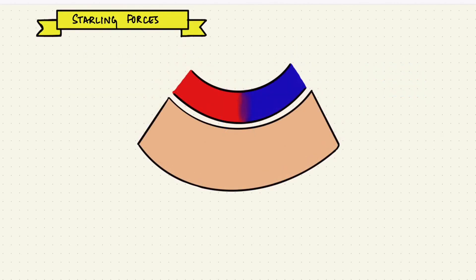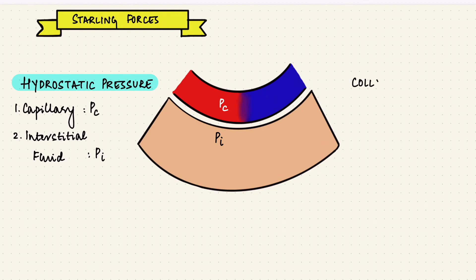There are two hydrostatic pressures, which would be the pressure exerted by the fluid itself on either side. In the capillary, it's Pc, and in the interstitial fluid, it's Pi. There are two colloid osmotic pressures, or oncotic pressures, which are controlled by proteins. In the capillary, πc, and the interstitial fluid, πi.